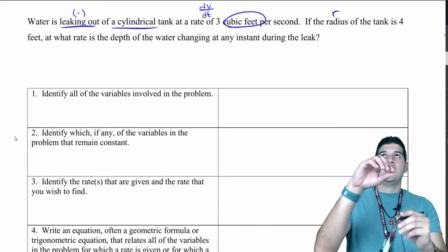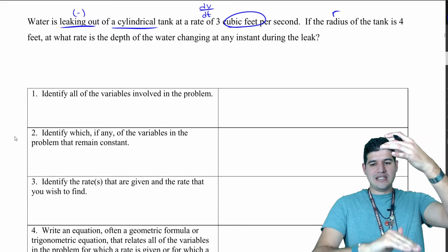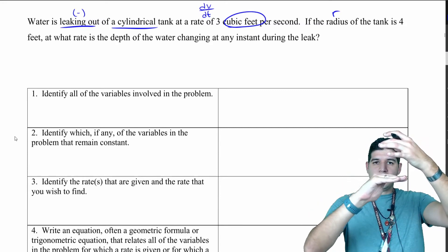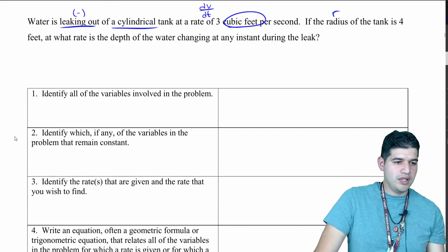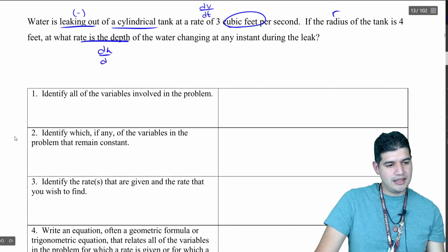At what rate is the depth of the water changing? The depth of the water in a tank - you're looking at the water going down in that tank. You want to be thinking of the height of the water, so that's going to be dh/dt.